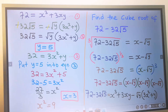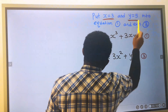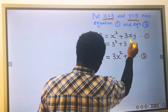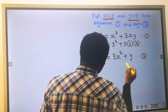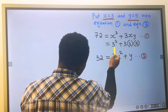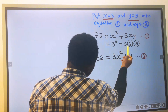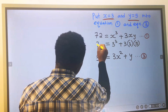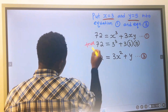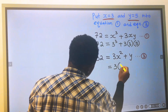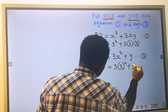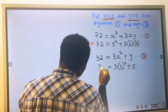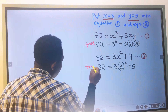Let us start with equation 1. Putting x equal to 3 and y equal to 5: 3 to the power of 3 plus 3 times 3 times 5. This is 3 times 3 times 3, which is 27, and 3 times 5 is 15 — wait, 3 times 3 is 9, and 9 times 5 is 45. So 45 plus 27 gives 72 — that is true. Next, for equation 3: 3 squared is 9, times 3 is 27, plus 5 gives 32 — that is also true.